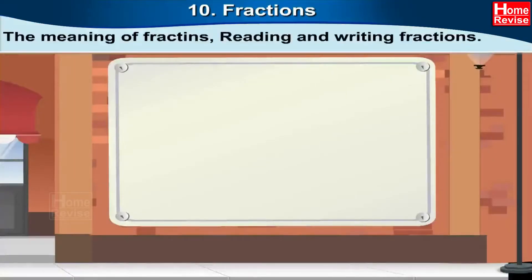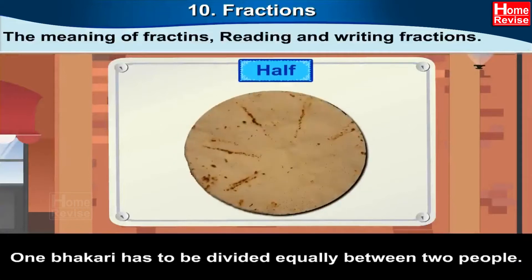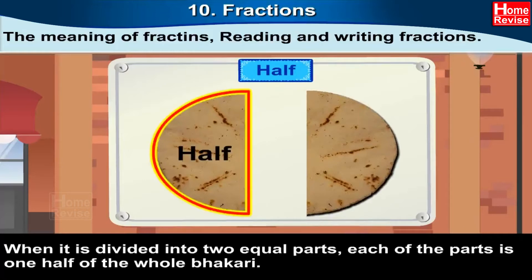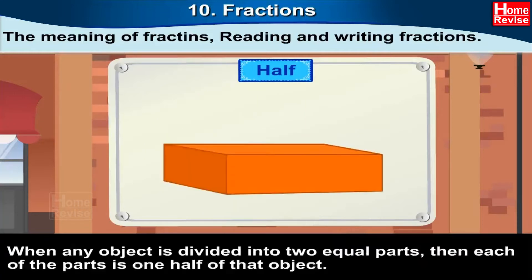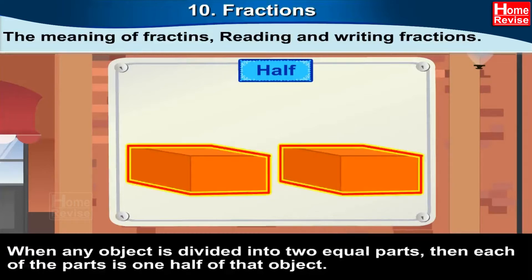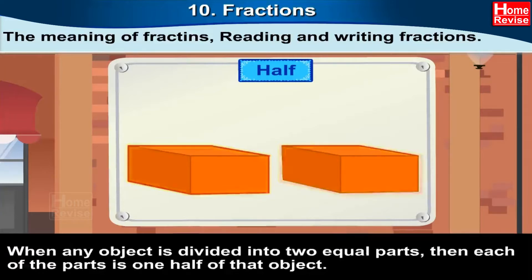Fractions: the meaning of fractions, reading and writing fractions. Half — one bhakri has to be divided equally between two people. When it is divided into two equal parts, each of the parts is one half of the whole bhakri. When any object is divided into two equal parts, each of the parts is one half of that object.